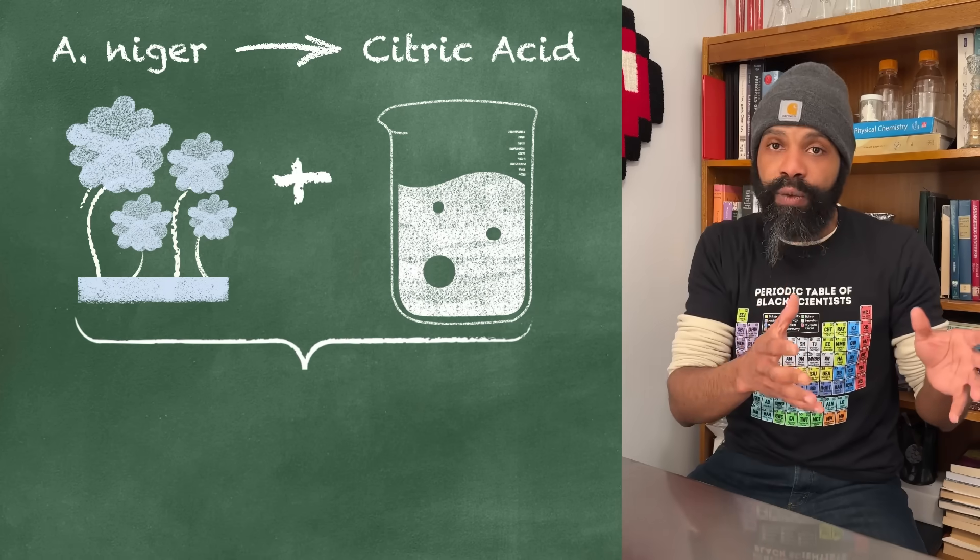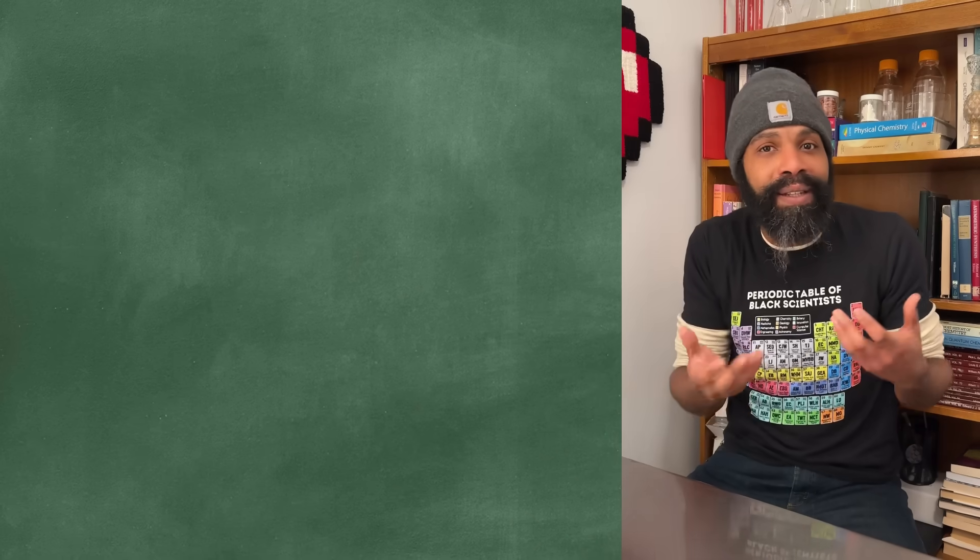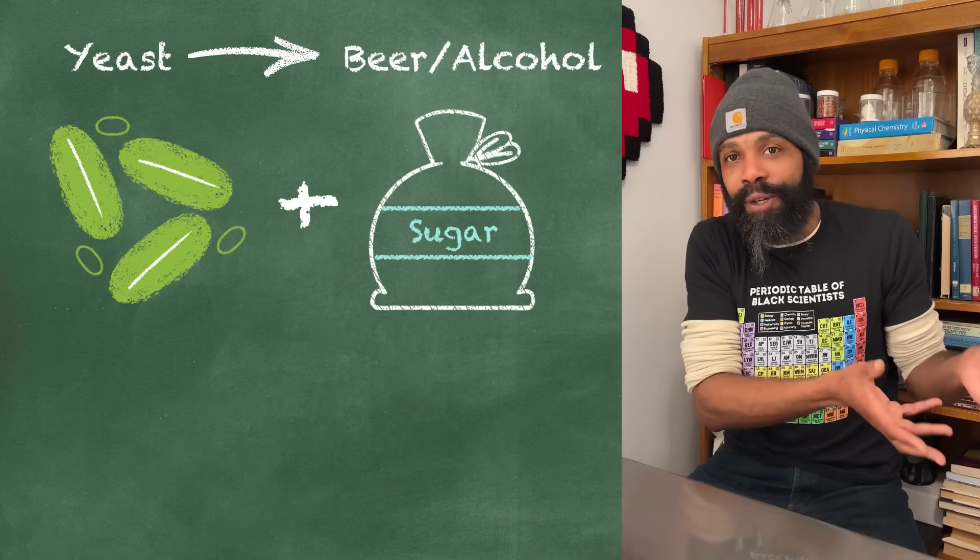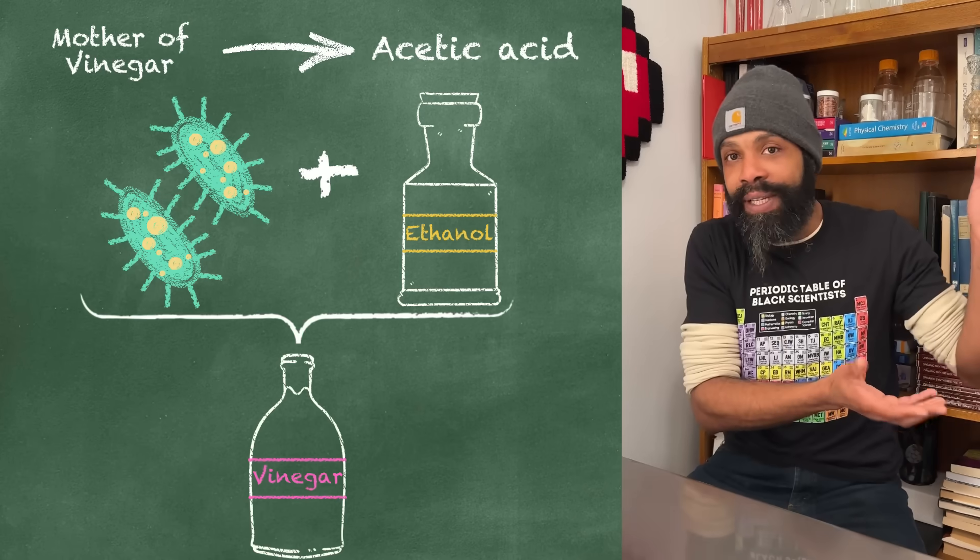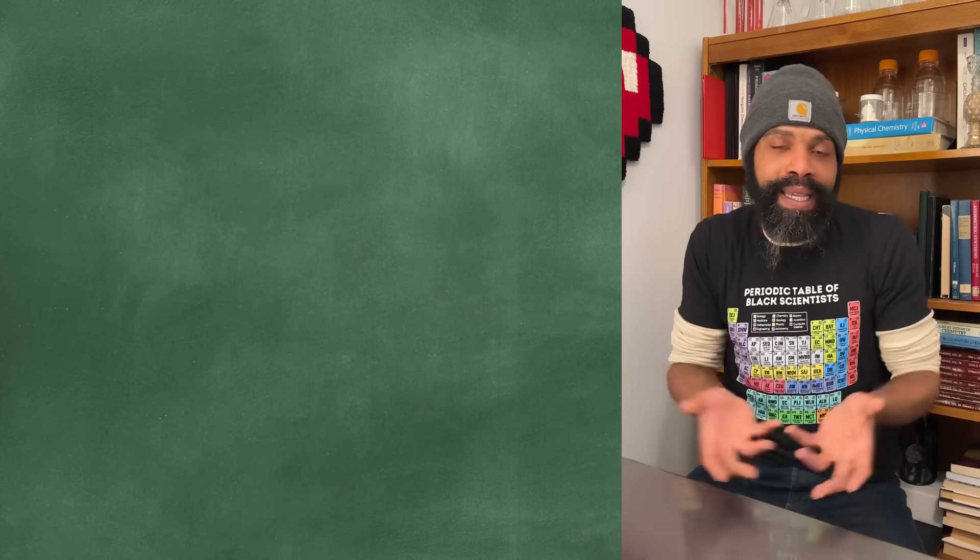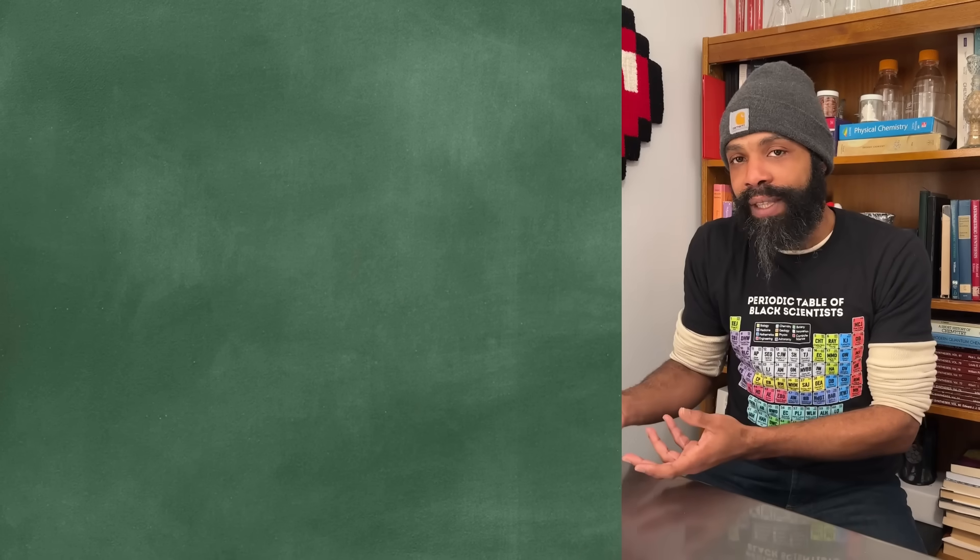But eventually the Aspergillus niger mold will turn that sugar solution that you gave it into citric acid and some other things, but mostly citric acid, kind of the same way that yeast turns sugar into beer and how a mother of vinegar turns ethanol into acetic acid.